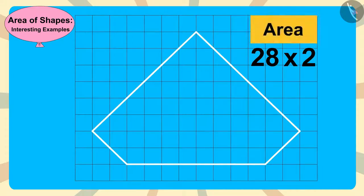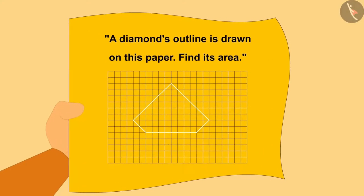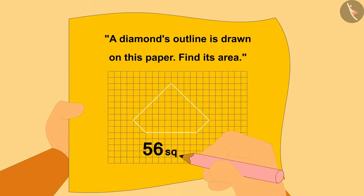Okay, the area of this diamond is 28 into 2, 56 square centimeters. Chanda immediately wrote the area of the diamond as 56 square centimeters on that paper.